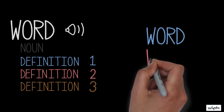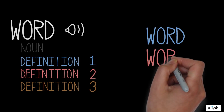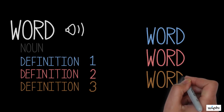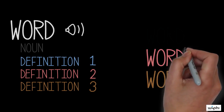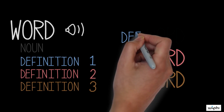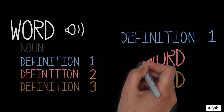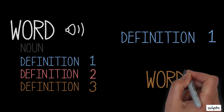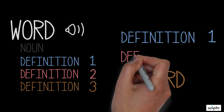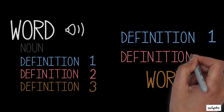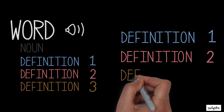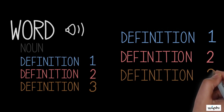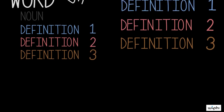Since equivocation results from multiple meanings of a single term, a helpful strategy to expose this fallacy is to restate the premises of the argument without the ambiguous term. For example, let's substitute our definitions of the word "star" into the premises of the previous example.